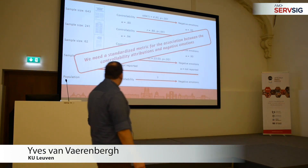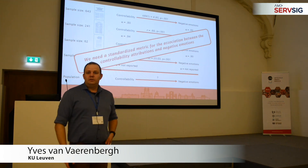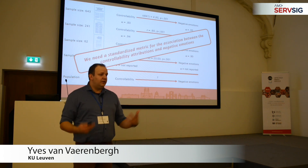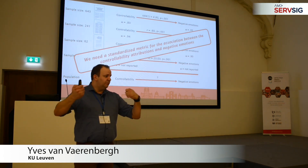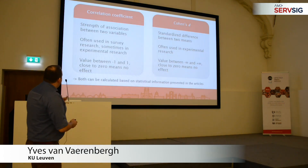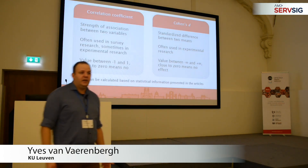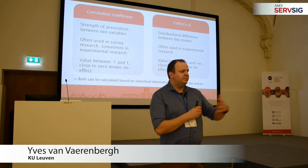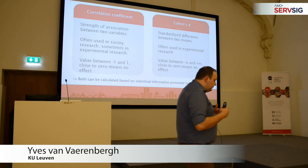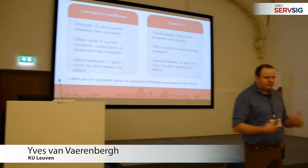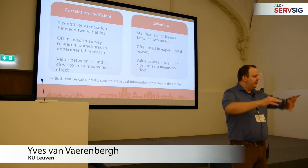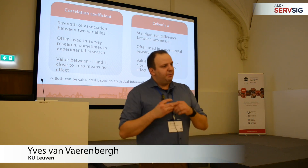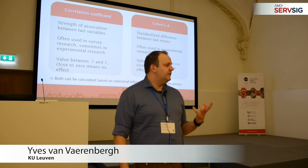We talked about correlation already, but there are actually a lot of different effect size metrics. Correlation is only one, and you typically use it for linear relationships. You also have Cohen's D, which is often used in psychology — it's an effect size metric more commonly used with experiments, and with means and standard deviations. In service, marketing, and management, you mainly see the correlation as the effect size metric.